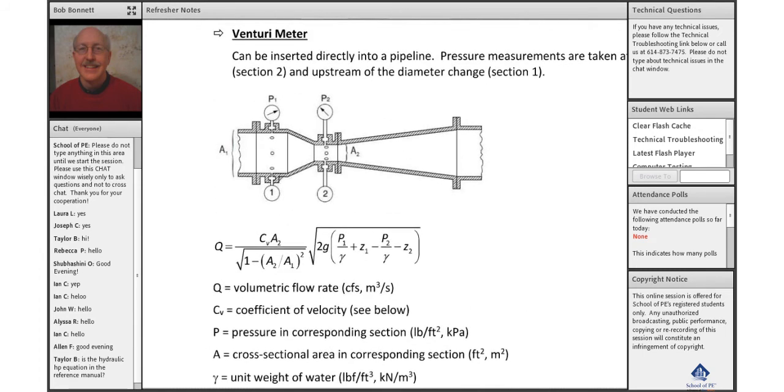As we decrease the diameter and decrease the area here, remember from the continuity equation: area goes down, velocity is going to go up. If velocity increases like it does, then V squared over 2g increases.